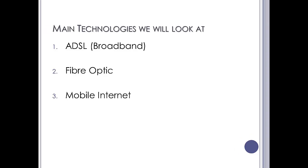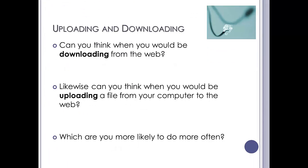Some of the technology we'll look at would be ADSL, fibre optic, and mobile internet — now there are more, but we're only going to cover some of them. So first of all, get used to uploading and downloading. When would you be downloading from the web? This would be any time you're downloading a file from a server onto your phone, tablet, laptop, or computer — you are downloading a copy.